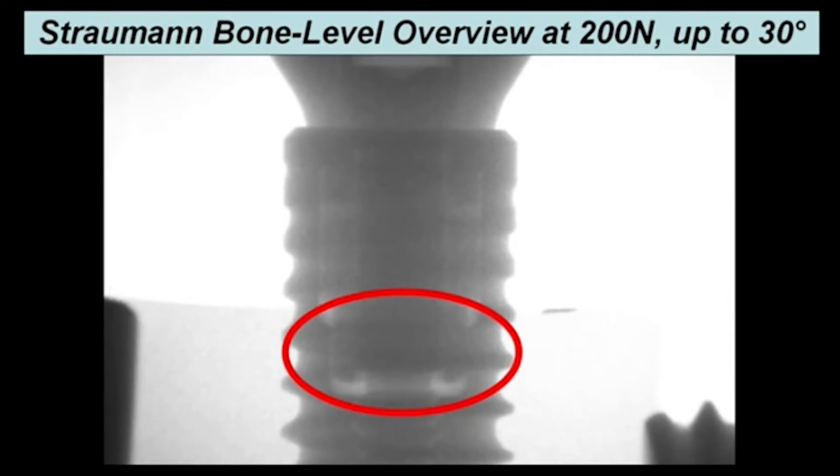This is from the bone-level implant from Switzerland, and from the first view it looks really very good. But you can see that the conical interface — the conical parts — are too small.